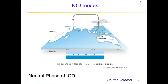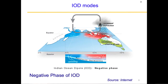Let us understand the basic physics of the IOD modes. During the neutral phase of IOD, the thermocline in the ocean does not have any preferential slope — it is a straight line — because there is no preferential upwelling or downwelling anywhere. Then there is another mode: the negative phase of IOD.